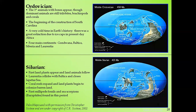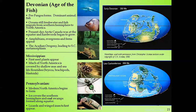Next is the Devonian, known as the Age of Fishes — the dominant animal during this period was the fish. The pre-Pangaea forms were developing, and the early Devonian was about 390 million years ago. Oceans' freshwater fish migrated from the southern hemisphere to North America. The present-day Arctic Canada was at the equator, and hardwoods, amphibians, evergreens, and ferns began to appear.